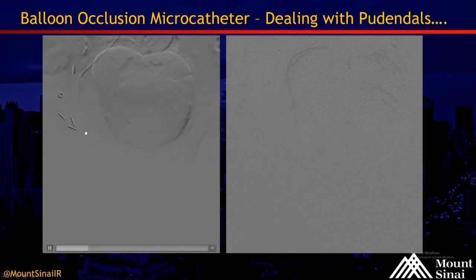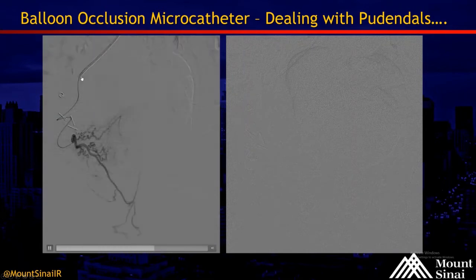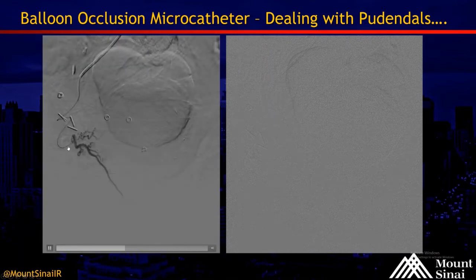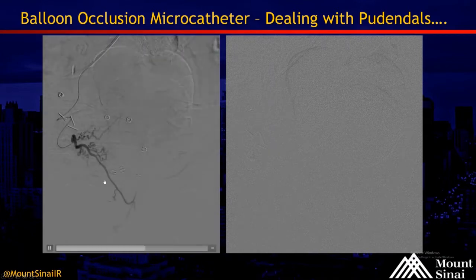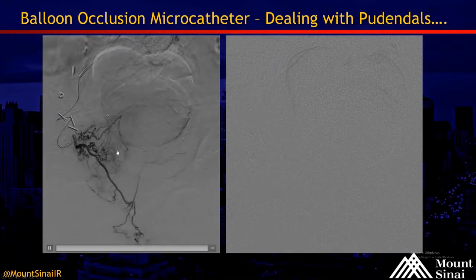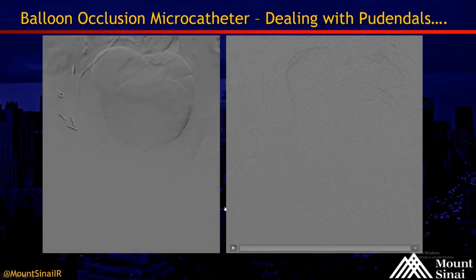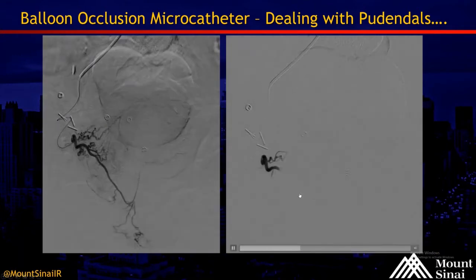This is a catheter in the pudendal trunk, and you can see a microcatheter with a balloon tip in the proximal prostatic circulation. What's very interesting about this angiogram is that this is a balloon tip microcatheter but the balloon has not been inflated. You can see prostatic circulation filling, including arteries going specifically to the median lobe — which in this patient is presumably causing significant symptoms — but also collateralization to pudendal branches. This anatomy is very common; we see it in almost every case to some degree, though this is an extreme example.